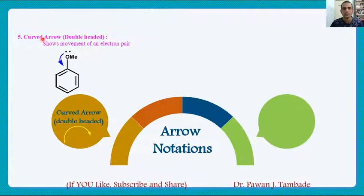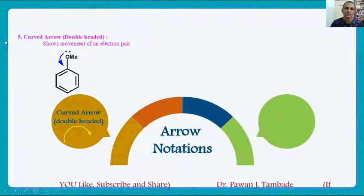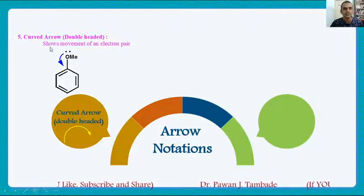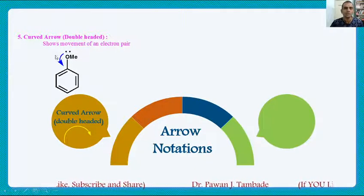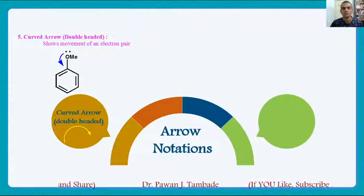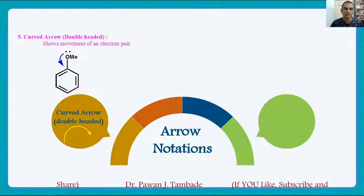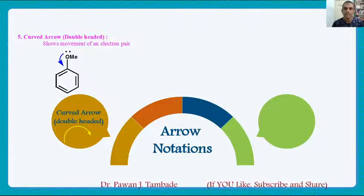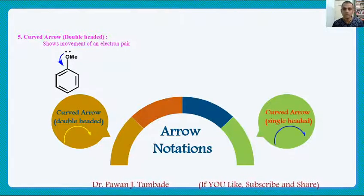In organic reaction mechanisms, specifically in ionic mechanisms, we normally use this double-headed curved arrow for showing movement of electrons from a nucleophilic species to an electrophilic species and so on.